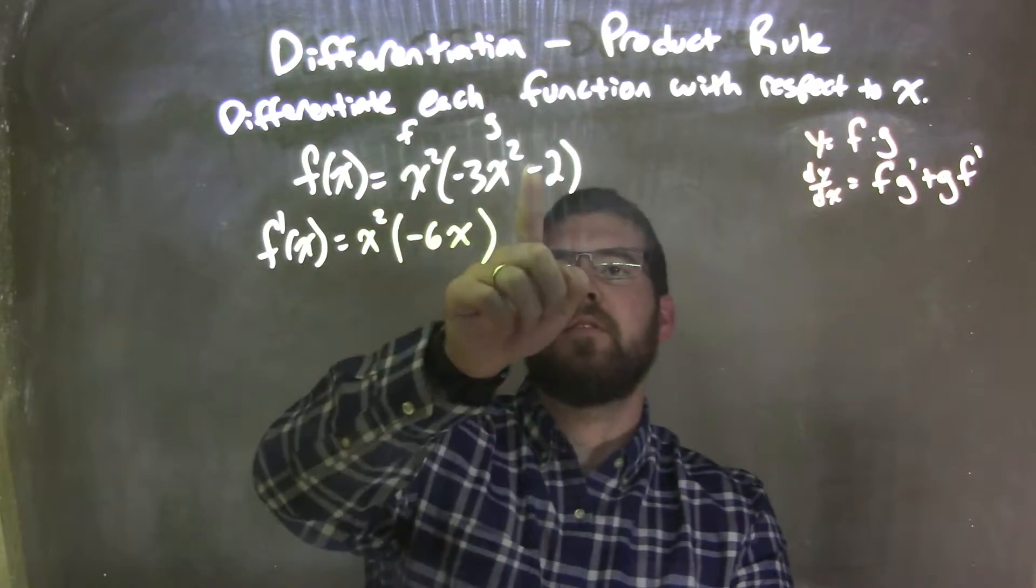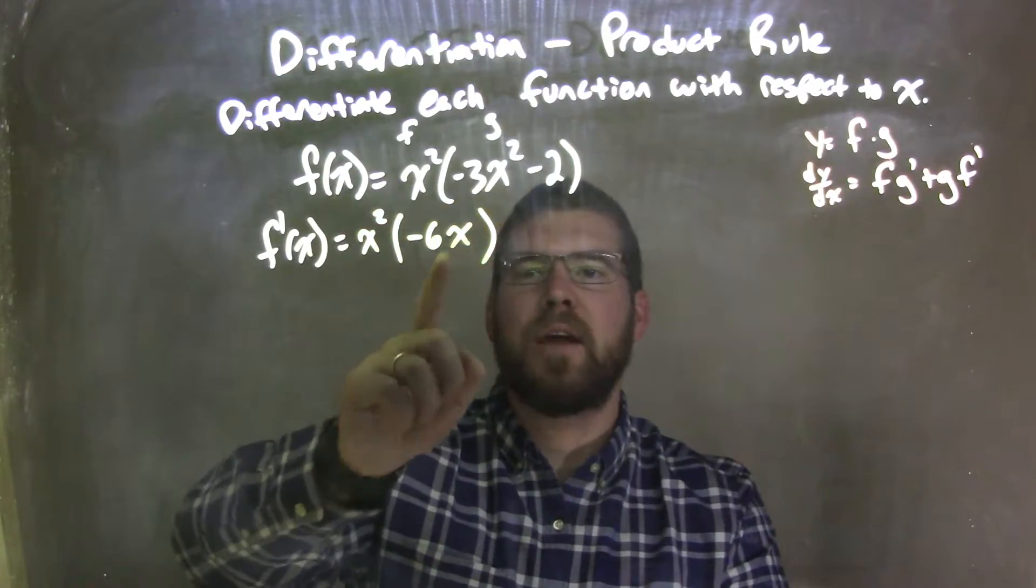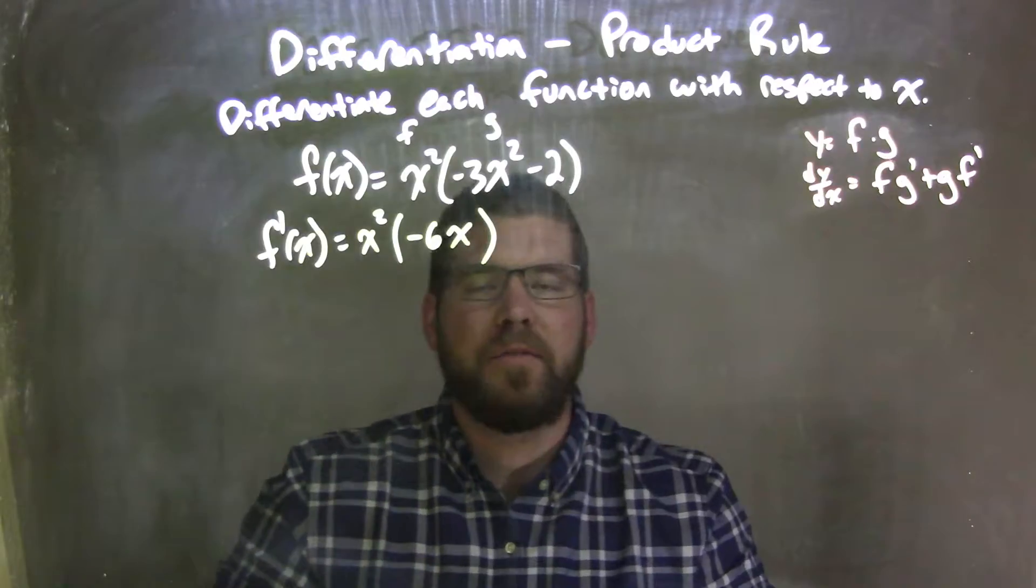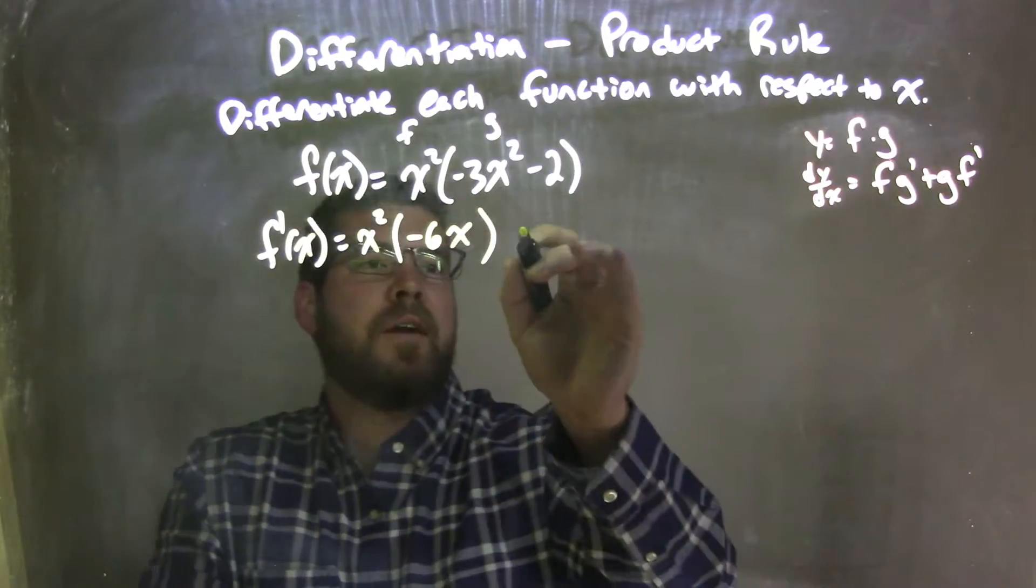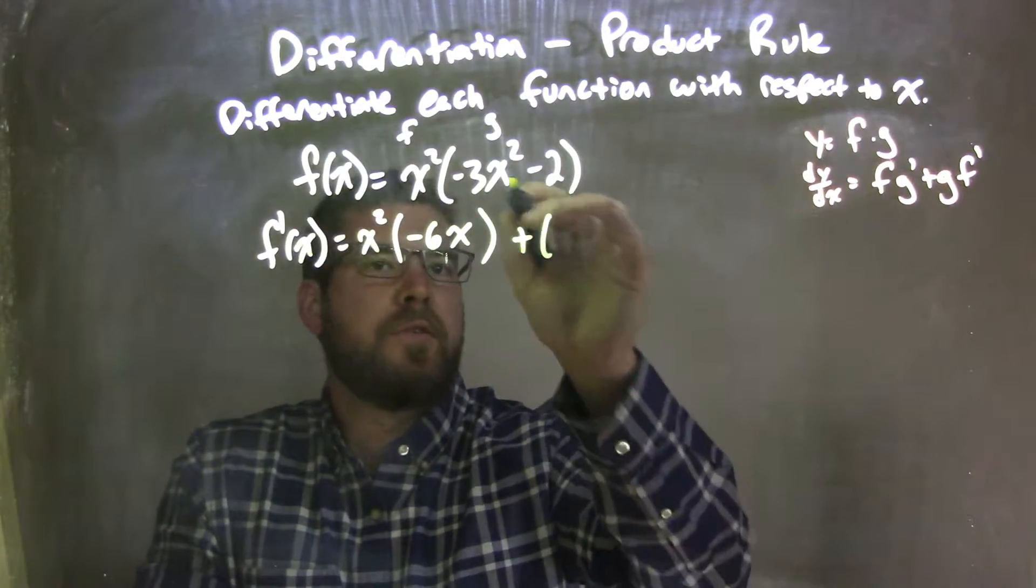x squared times the derivative of the inside of this parentheses here, so that's negative 6x. Derivative of that is power comes down, we find a power rule there, negative 6x, and then derivative of negative 2 is 0. So negative 6x there, plus,